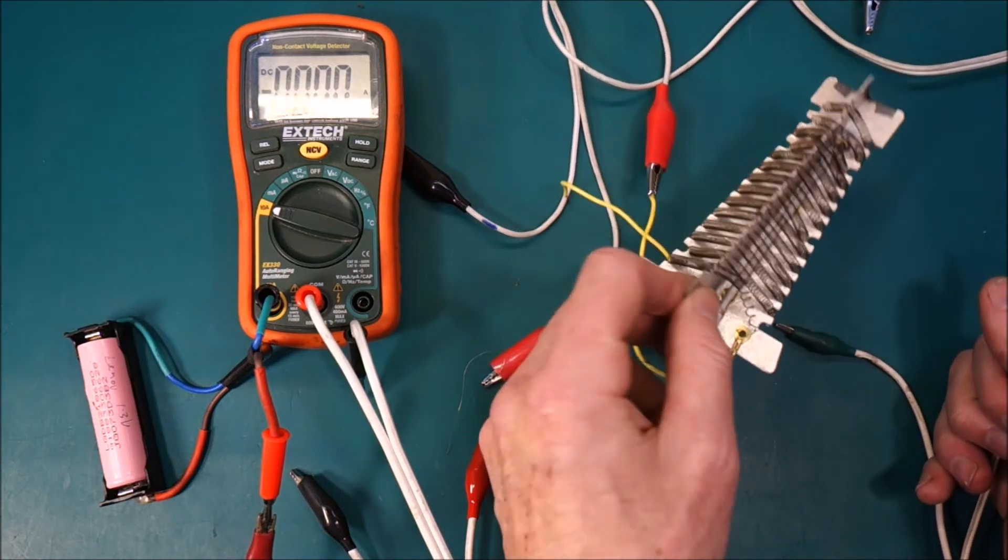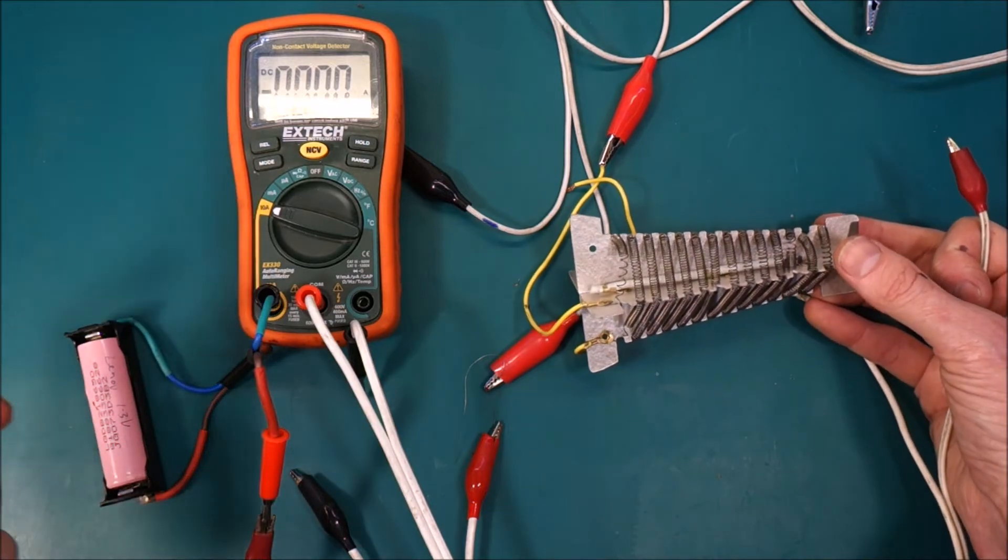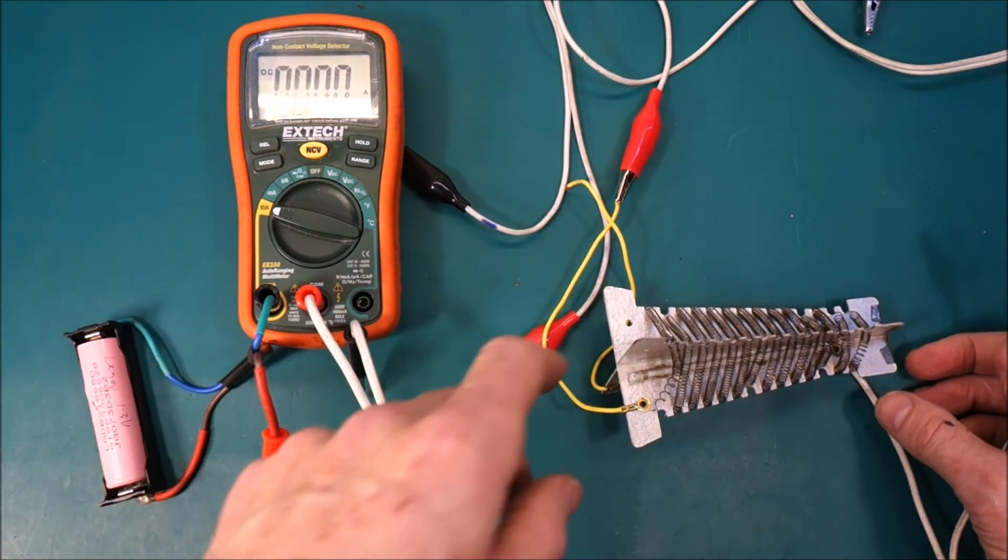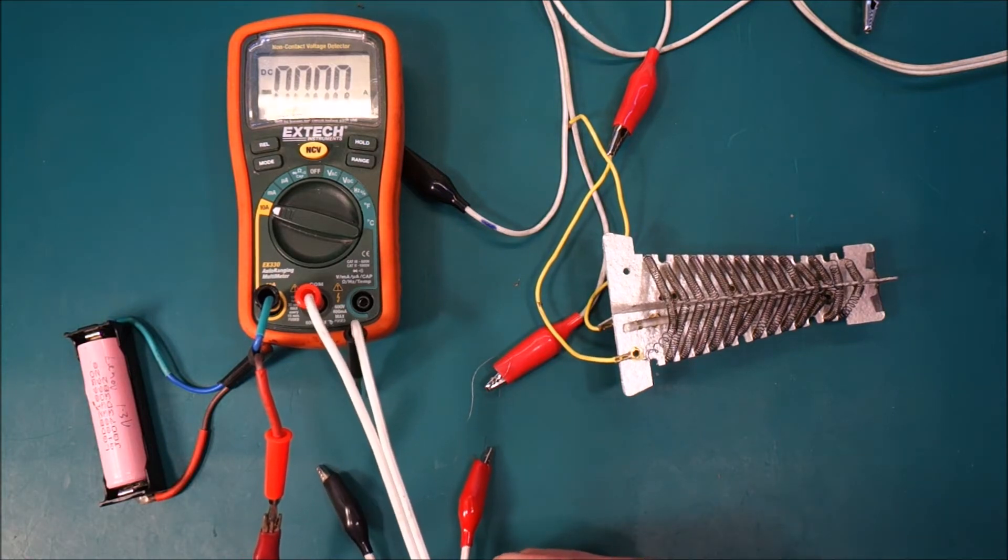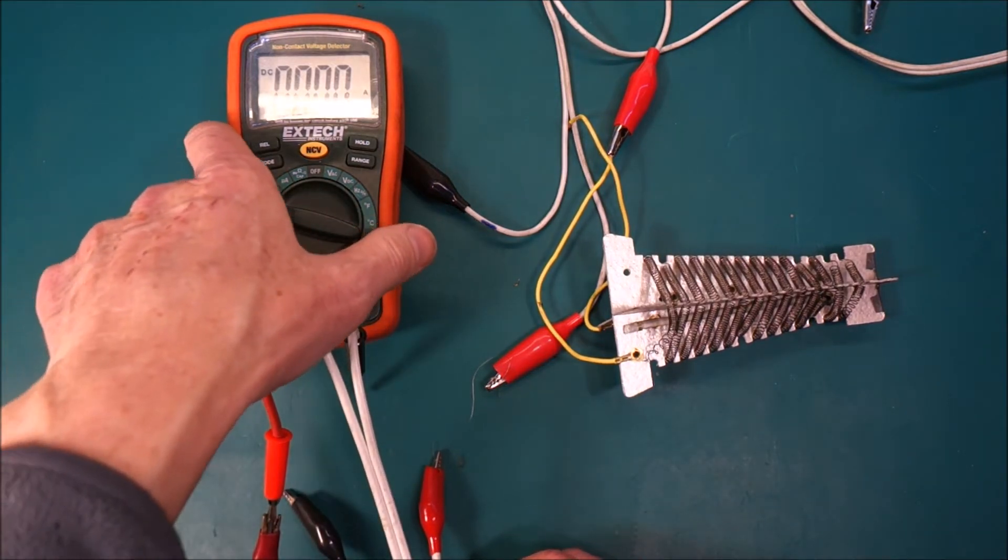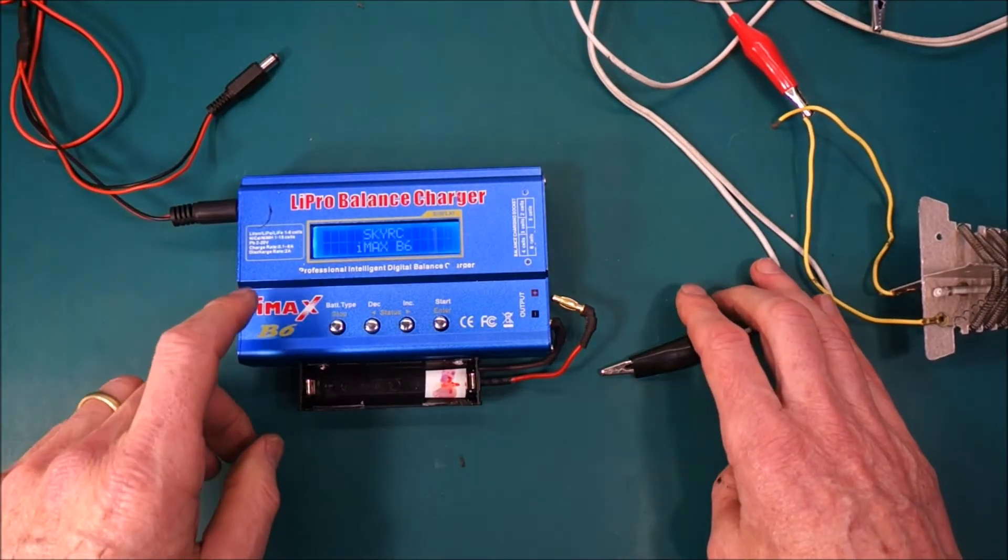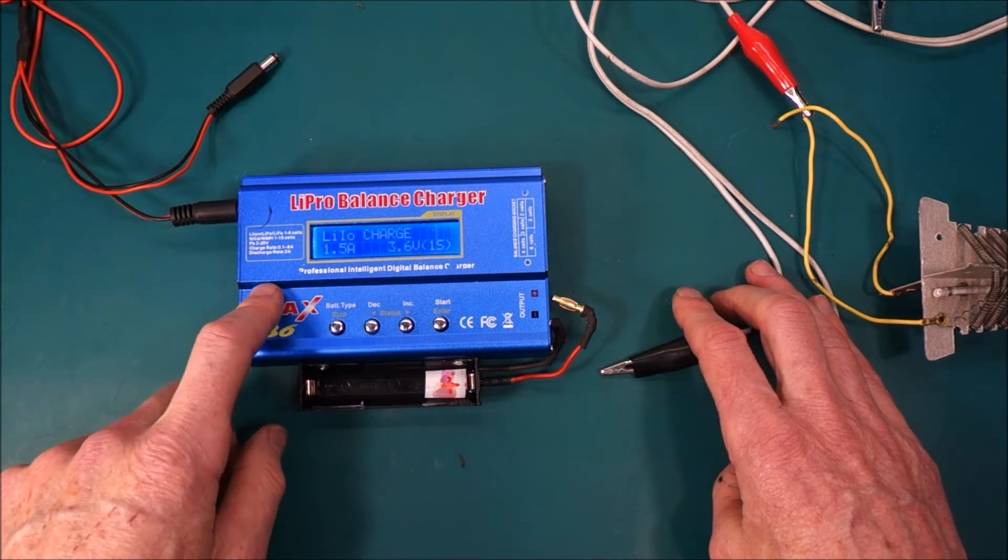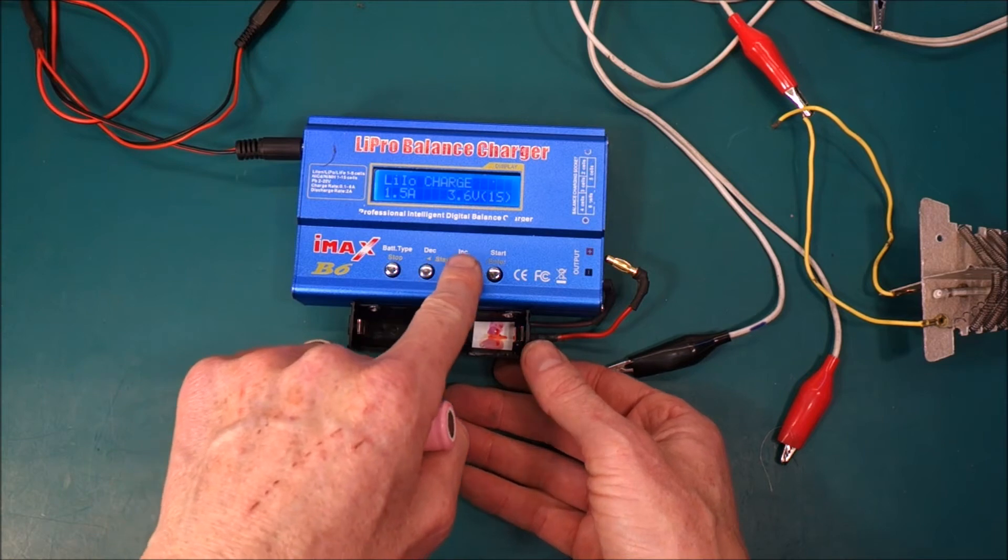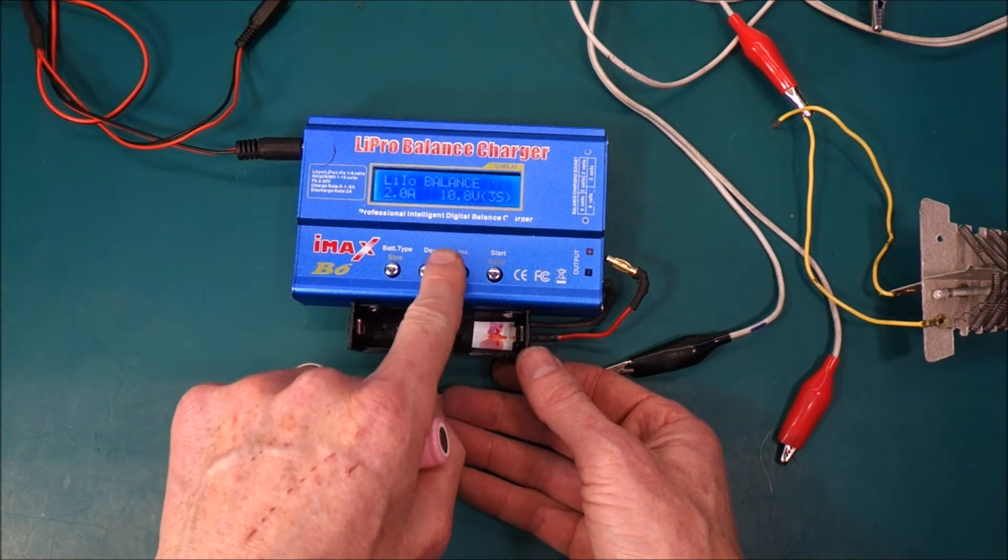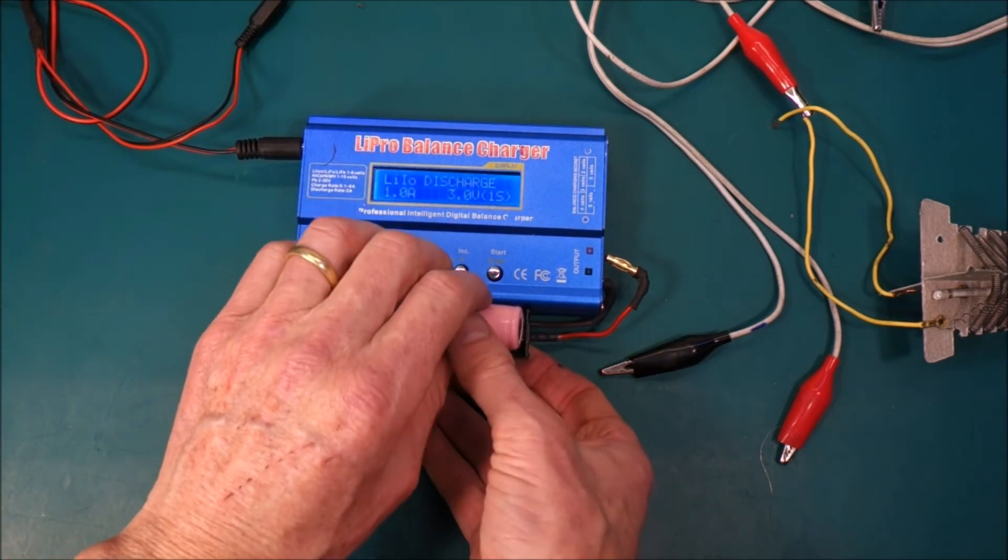So that is a very simple way of testing whether or not your fuse wire is going to cope with the load that you are likely to have on your powerwall. There are other ways of testing of course. One of them is to use your IMAX V6. Which also has a discharge mode. So you can set the discharge current.